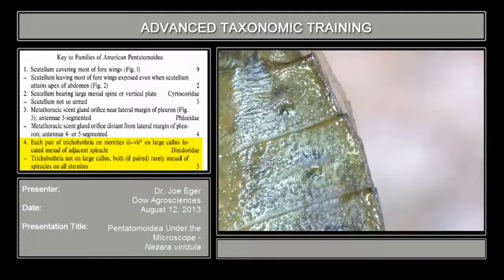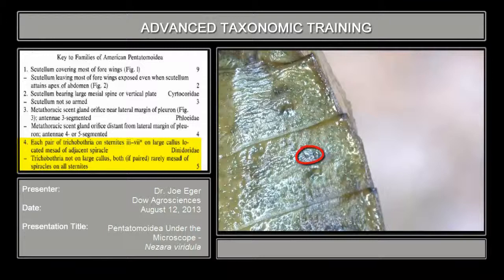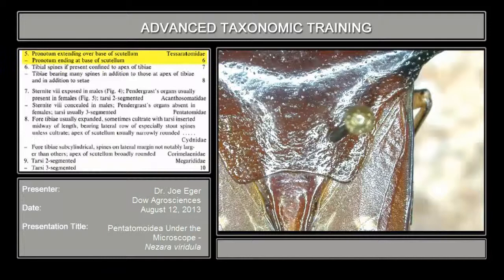Couplet number four: your choices are each pair of trichobothria on sternites three to seven on a large callus located mesad or ventrally away from the adjacent spiracle, or trichobothria not on a large callus, rarely mesad of spiracles on all sternites. Trichobothria are pretty difficult to see, but here's a pair — they're not on a callus and they're right in line with the spiracles. So what we have here is not an adenocorinae. We go to couplet five.